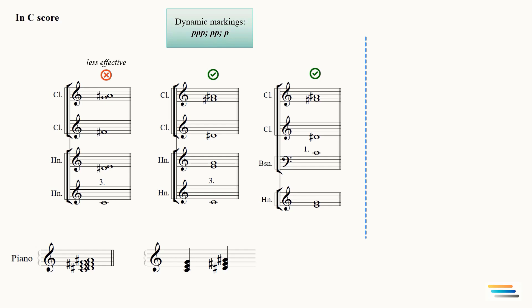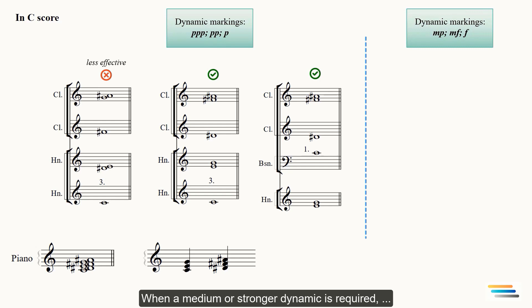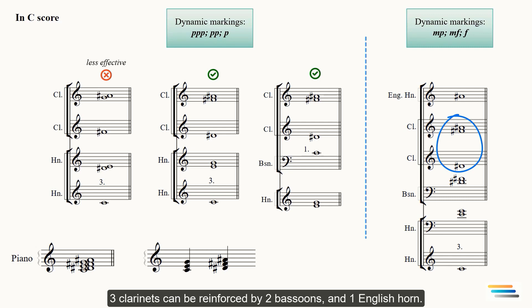When a medium or stronger dynamic is required, the upper portion of the harmony should be doubled by two instruments. For example, three clarinets can be reinforced by two oboes and one English horn.